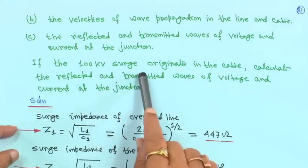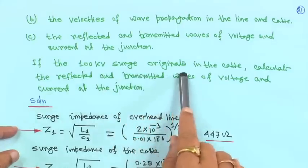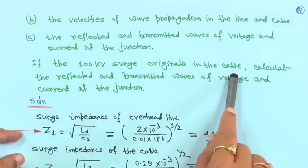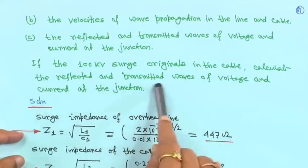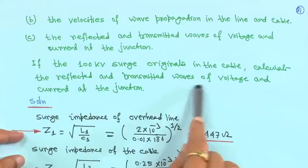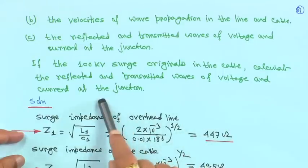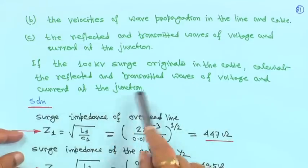If the 100 kV surge originates in the cable, calculate the reflected and transmitted waves of voltage and current at the junction.